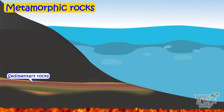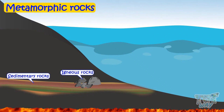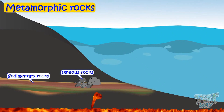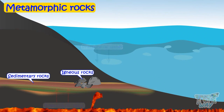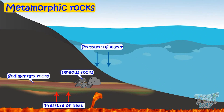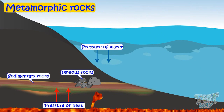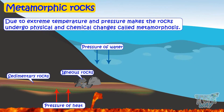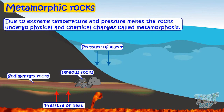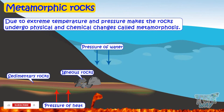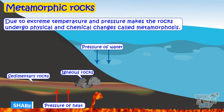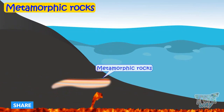Metamorphic — sedimentary rocks and igneous rocks may get trapped at great depth beneath the earth's surface under high temperature and pressure. And this extreme temperature and pressure makes the rocks undergo physical and chemical changes, which is called metamorphosis. And sedimentary and igneous rocks change to metamorphic rocks.